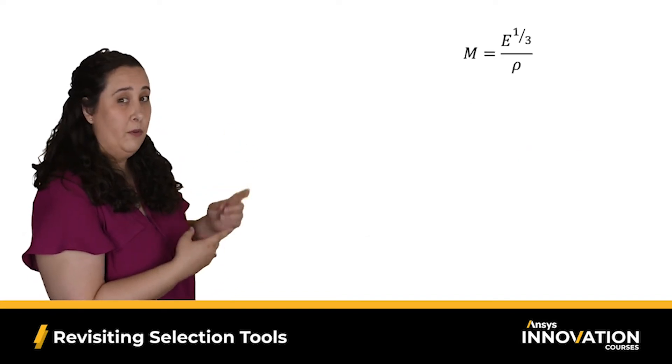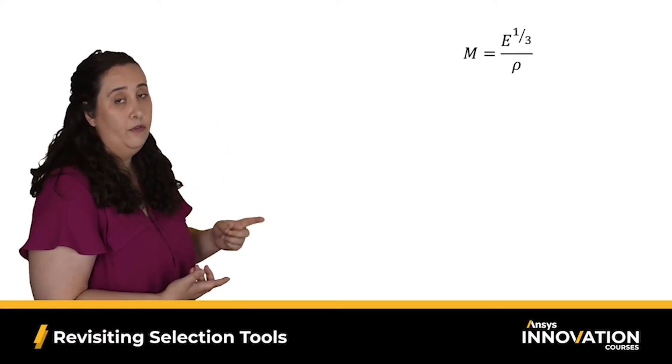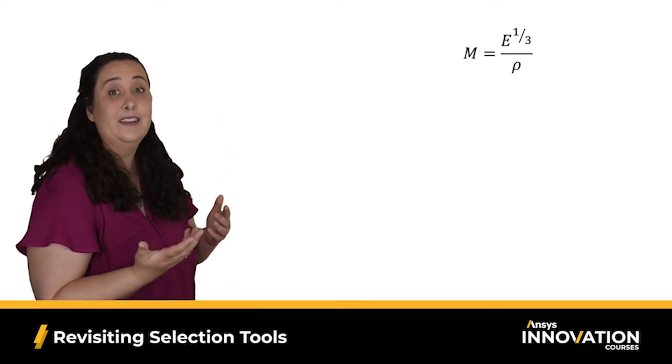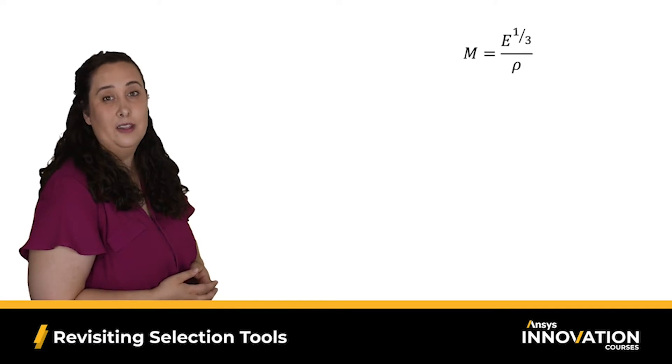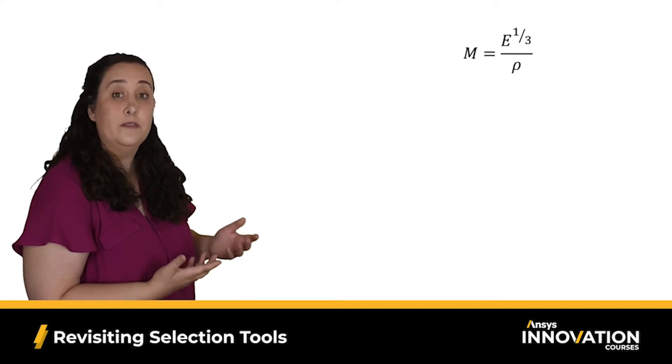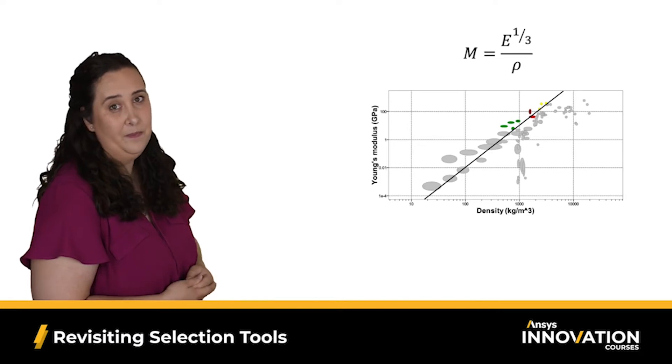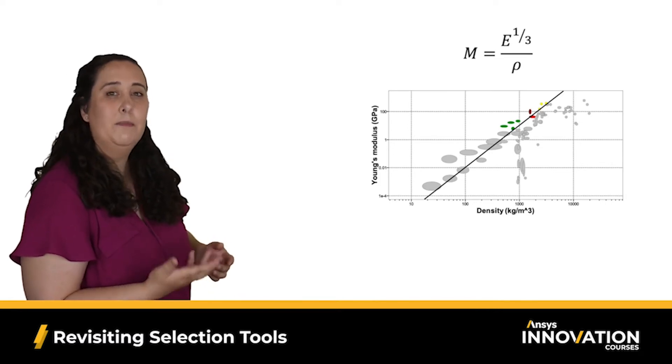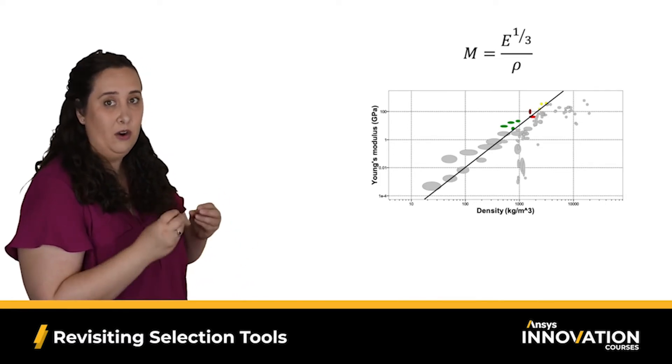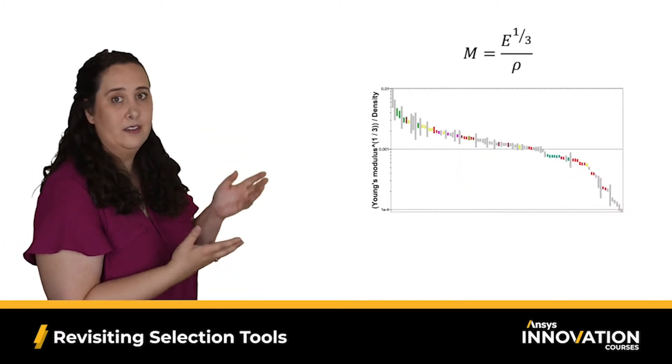We can see an example performance index here. We have Young's modulus to the one-third power over density. This is the performance index from our longboard example at the end of course 3. We saw that there were multiple ways to visualize our performance indices, such as a selection line on an Ashby chart. But we had mentioned that performance indices are a single equation, which can be plotted on a single axis, like shown.